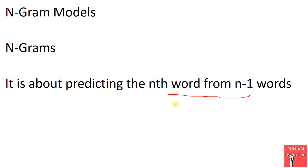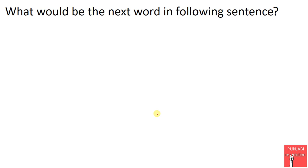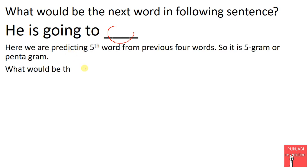Let's see some examples to further elaborate on this point. What would be the next word in the following sentence: 'He is going to blank'? Here we are predicting this word from four previous words, so we are predicting the fifth word from previous four words. It is called a five-gram or pentagram.